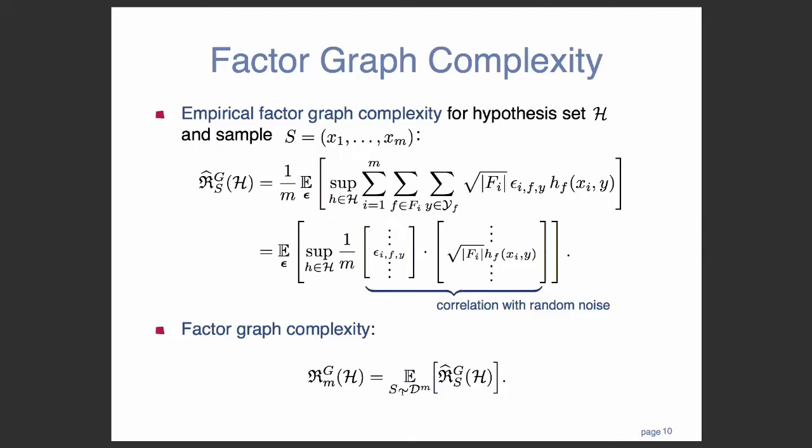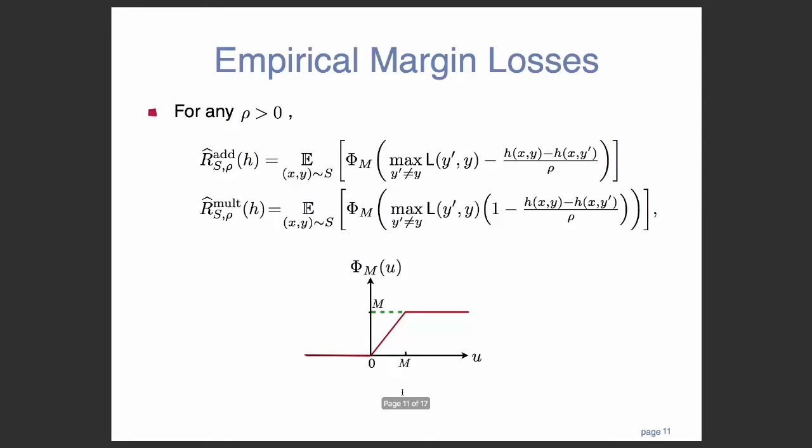So another ingredient we need before we derive generalization bounds is the notion of empirical margin loss. So if you were in the talk this morning with an indigent, you know that people care about margin a lot, especially in structure prediction. And a lot of algorithms are based on maximizing margin. And the whole idea of margin is basically just that we don't want our scoring function or prediction just to be accurate. We want to have some reasonable level of confidence with that. And a scoring function that's able to predict confidently should be able to generalize better than a scoring function that is almost on the borderline of being incorrect.